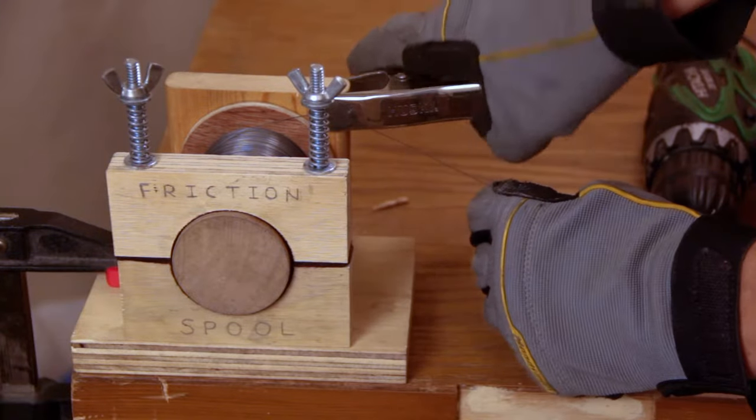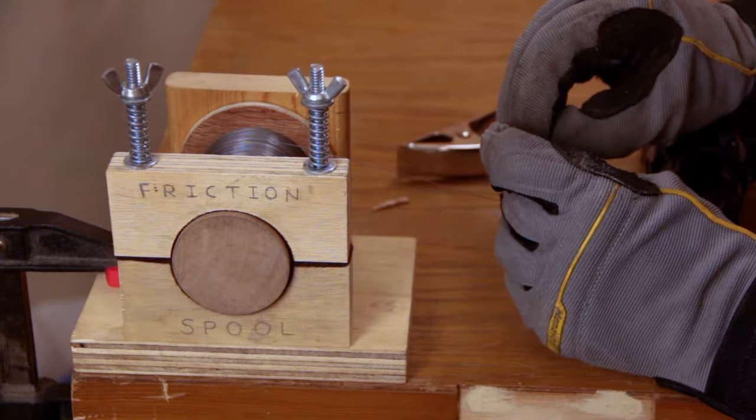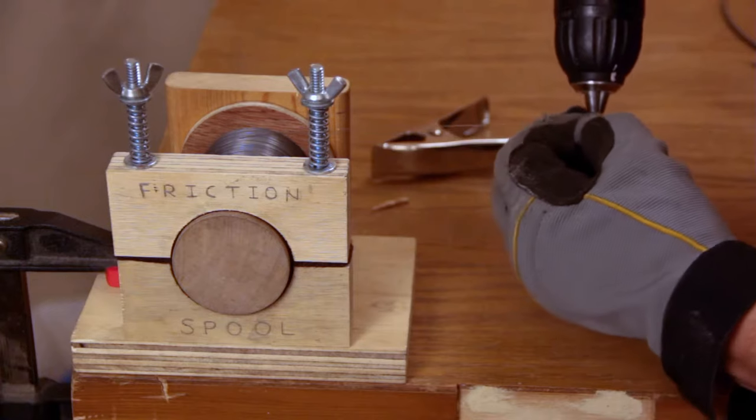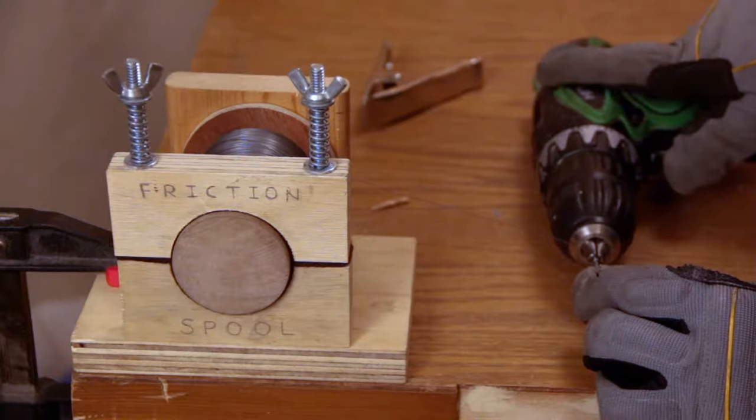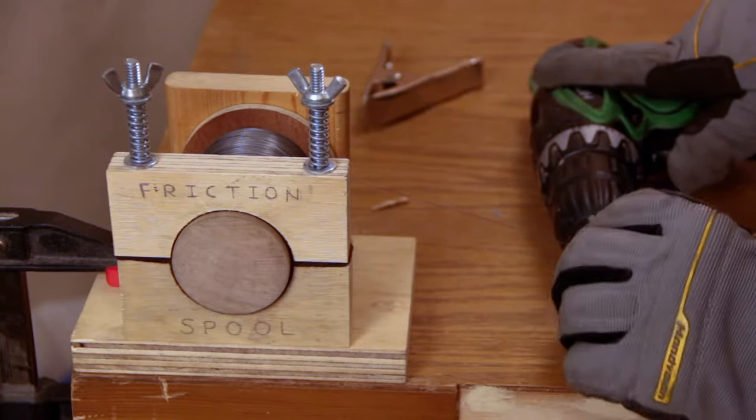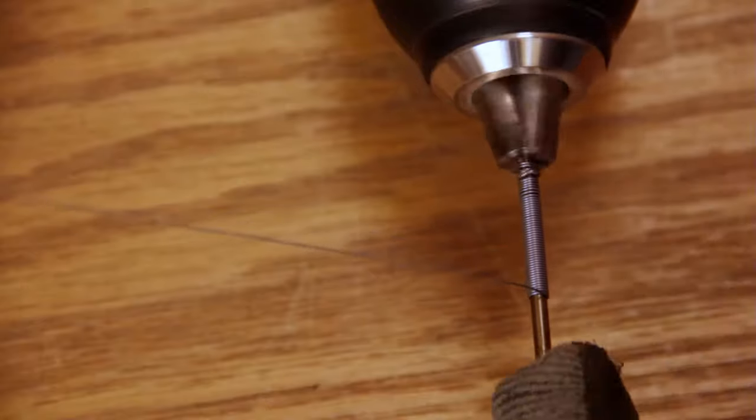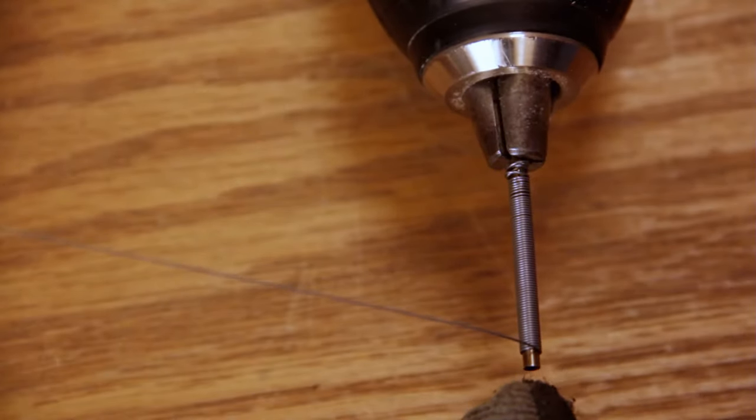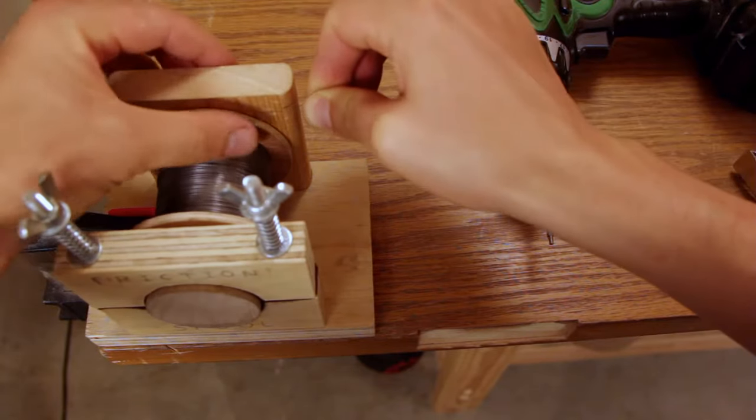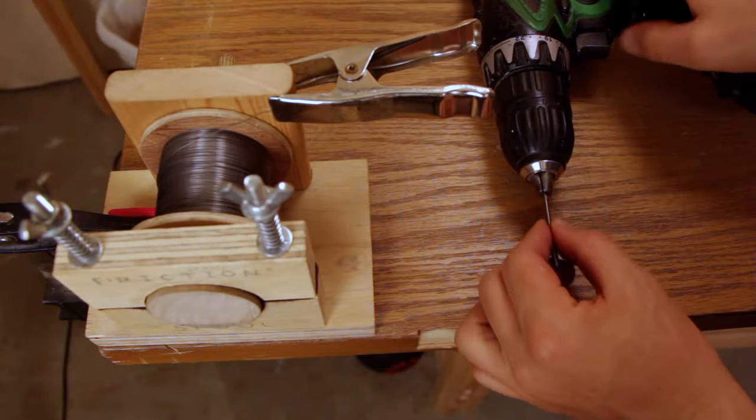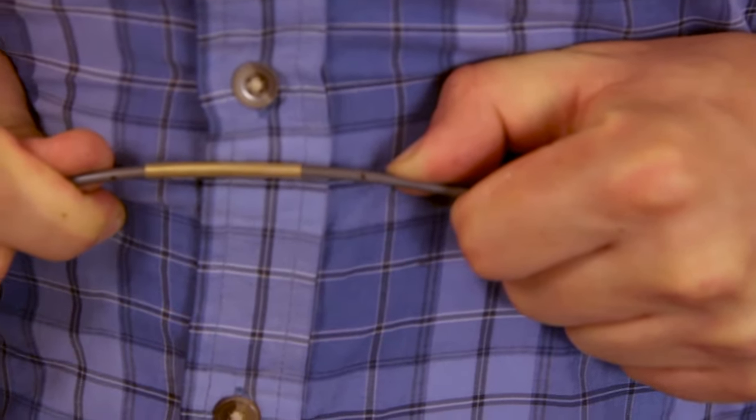Now I'm going to make the links that will connect the rods to the hoop and allow them to swing and pivot. I'll form some spring wire around a shaft that's slightly smaller than the diameter of the shaft of the hoop. I've got a drill bit that looks to be about the right size, chucked backwards in the drill to wrap the wire around.